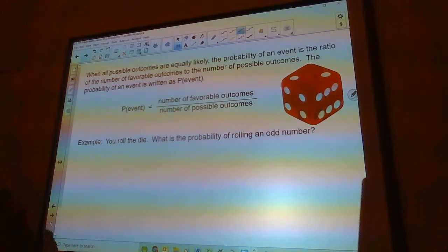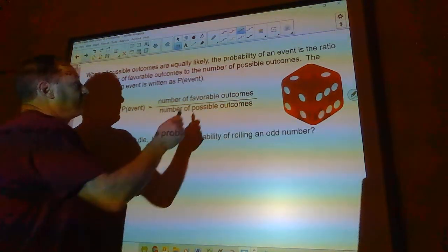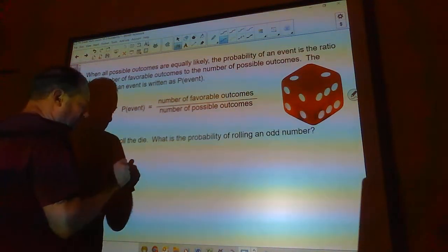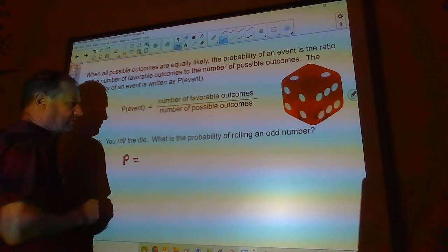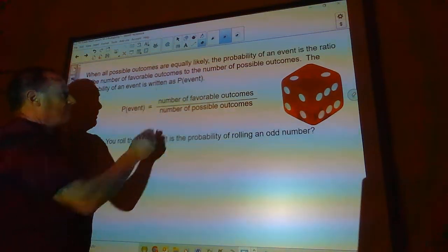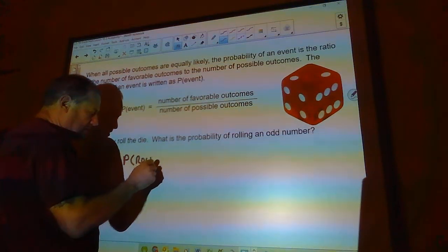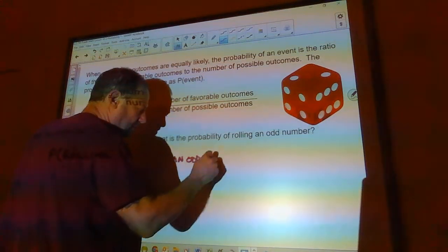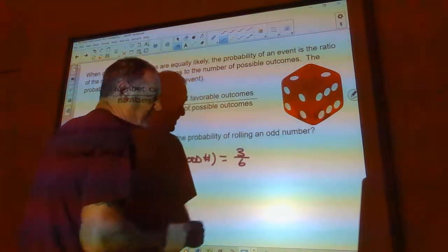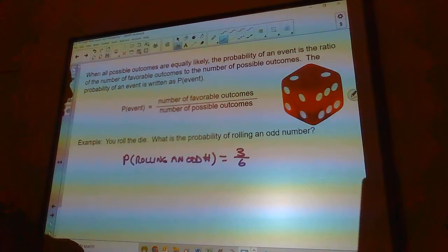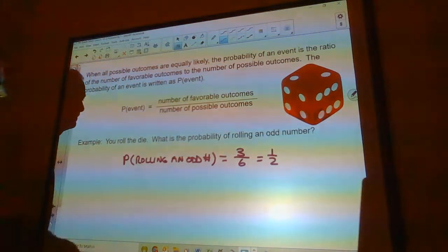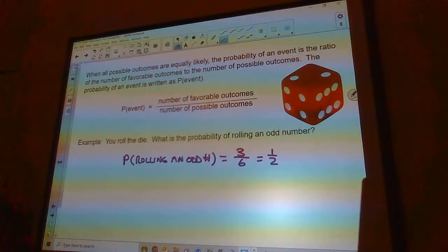If I roll a single die, what is the probability of rolling an odd number? Well, there's three odd numbers out of six faces. So the probability of rolling an odd number is three out of six because there's three odd numbers and there's six faces. So that's one-half. It's equally likely that you'll either get an odd number or an even number.